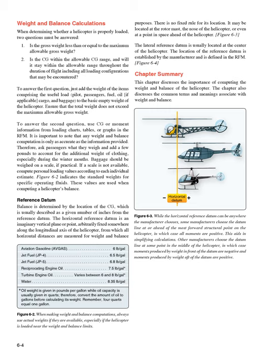To answer the second question, use CG or moment information from loading charts, tables, or graphs in the RFM. It is important to note that any weight and balance computation is only as accurate as the information provided. Therefore, ask passengers what they weigh and add a few pounds to account for the additional weight of clothing, especially during the winter months. Baggage should be weighed on a scale if practical. If a scale is not available, compute personal loading values according to each individual's estimate. Figure 6-2 indicates the standard weights for specific operating fluids, and these values are used when computing a helicopter's balance.